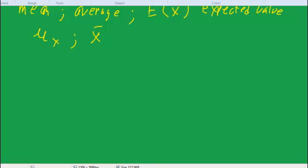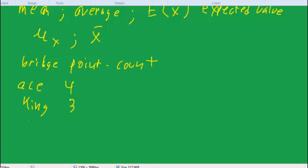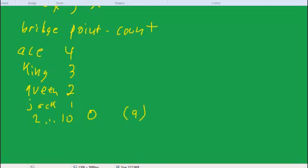So I'm going to use a sample random variable, which is the bridge card point count system. Don't worry, I'll explain it to you. You don't have to know anything about bridge. We say an ace is worth four points, a king is worth three, queen two, jack one. And then all the cards two through ten are worth zero. Now how many cards are in the two through ten? There are a total of nine cards in two through ten.